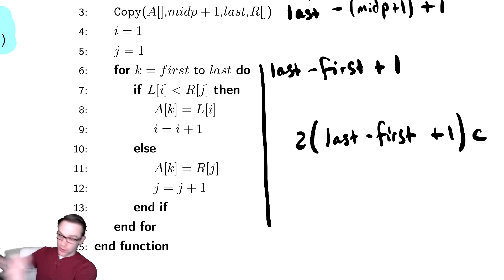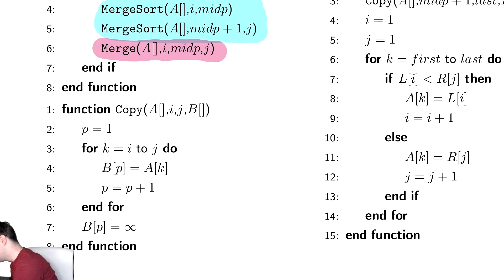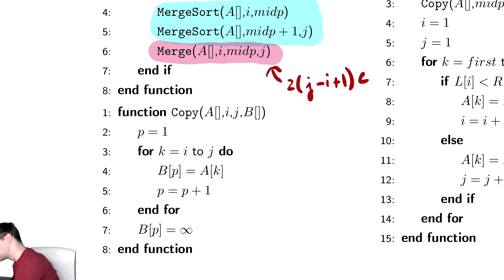Let's go back to the actual merge sort code and see what happens with the merge call. The merge call has first and last being i and j respectively. So that one line of code takes two times j minus i plus one times c time. And if you remember, that is exactly what n was. So this takes 2cn time because you have to copy everything. That's the cost for merge, that's our non-recursive work. We then need to figure out the sizes of the recursive calls.